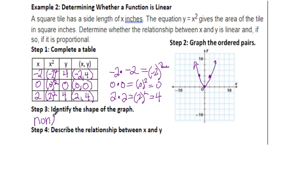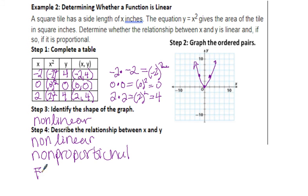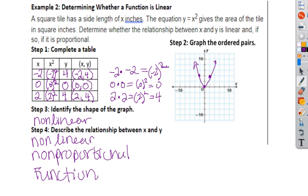This says identify the shape of the graph. We would say this is non-linear. This does not make a straight line. Then it says describe the relationship between x and y. The relationship is that they're non-linear, which automatically makes it non-proportional. But it is a function, because if you notice, my x's don't repeat. The y's are going to be repeating, but remember, I don't care if the y's repeat. So this is non-linear, non-proportional, but it is in fact a function.